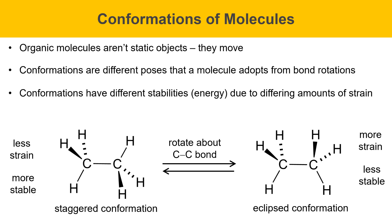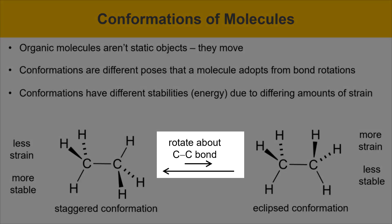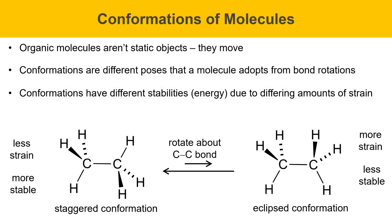Since the staggered conformation is more stable than the eclipsed conformation, staggered will be preferred over eclipsed. Ethane will spend much more time in the staggered conformation. The equilibrium will favor staggered — I've changed the magnitude of the equilibrium arrows to reflect that the staggered structure is much more abundant. In this experiment, we'll be expanding on this idea and looking at the conformations of more complicated alkanes, using a computer program to tell us how much more stable one conformation is than another.